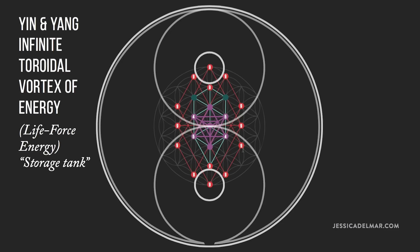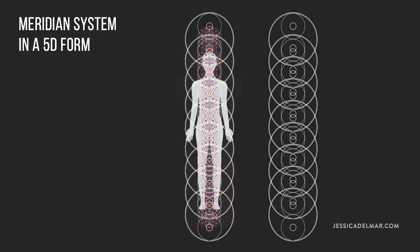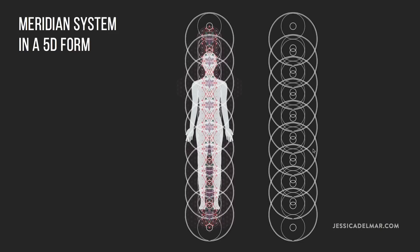Now we're going to look at how this yin and yang infinite toroidal vortex of energy — pulled first into the energetic body and then the physical form — plays into the 5D form. It looks very different from the 3D connection to its yin and yang toroidal sphere of energy. It's all connected to each of the imprints and ultimately forms a sort of tunnel of energy that the person is essentially within. The yin and yang sphere-like storage tank of energy in the 3D form now opens into a portal or tunnel-like storage tank of energy in the 5D form.